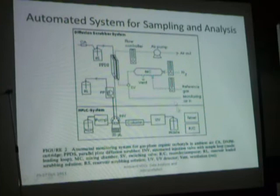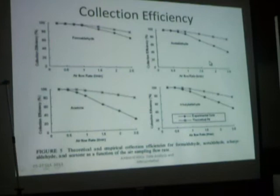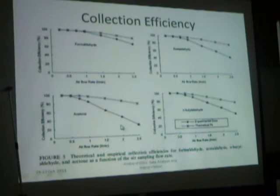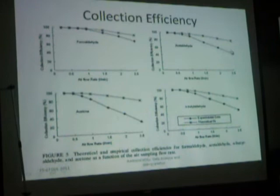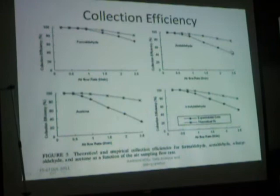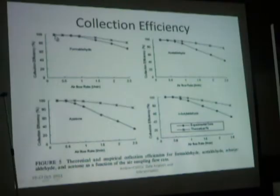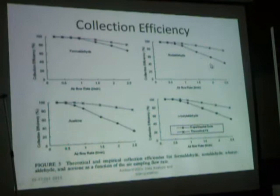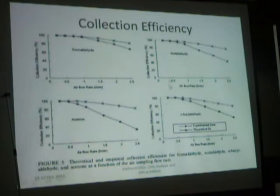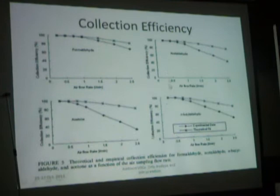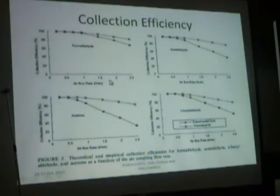So this is going to automate the systems. This is looking at collection efficiency with this parallel plate diffusion scrubber. The triangles and diamonds show the actual measured collection efficiency. The theory and experiment agree better at very low flow rates — these don't work very well at high flow rates. If you get below half a liter per minute, you may have decent collection efficiency. So one really needs to explore the collection efficiency settings; there's more research to do with this technique.